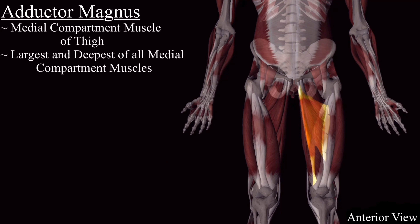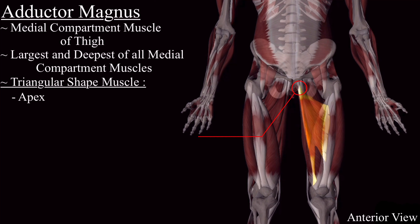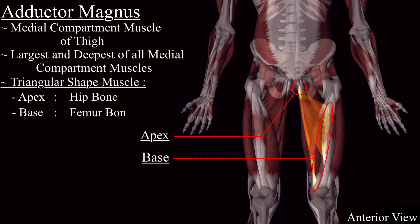Like the adductor longus or adductor brevis muscle, this muscle is also a triangular or fan-shaped muscle. The apex of it is attached to the hip bone, and the extended base is attached to the femur bone.